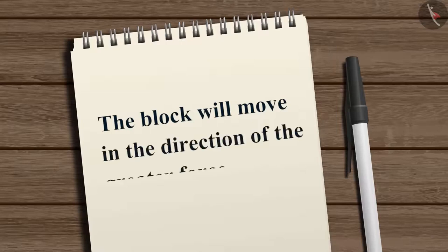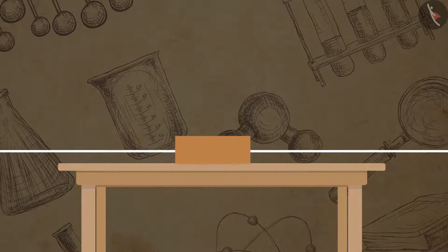Now what if we pull both the strings with unequal forces? Will the block still remain at rest? In this case, the block will move in the direction of the greater force. If the block is pulled by the right string at a greater force than that of the left string, the extra force on the right string will cause the block to move towards the right.